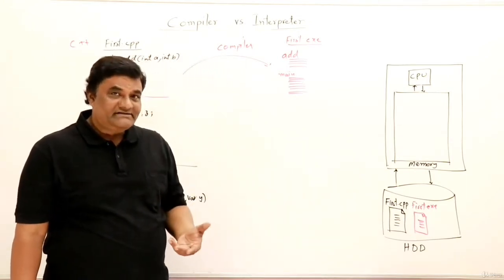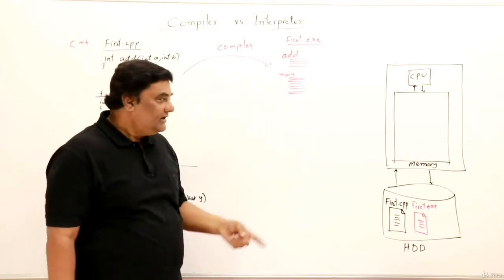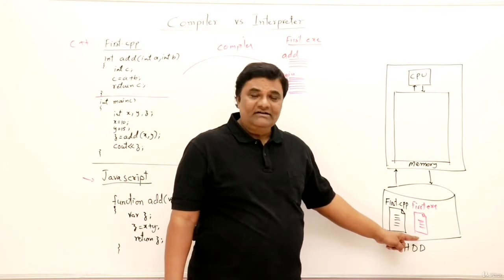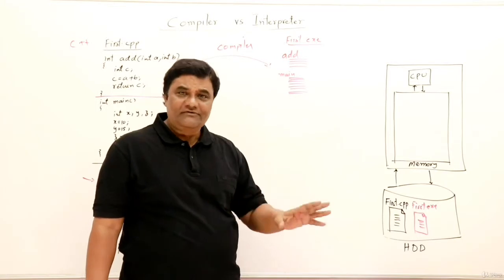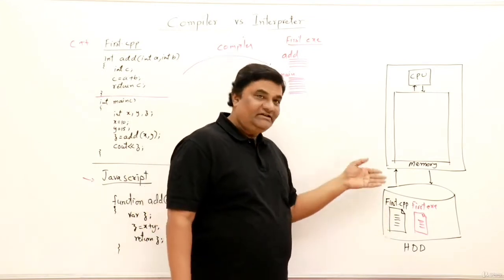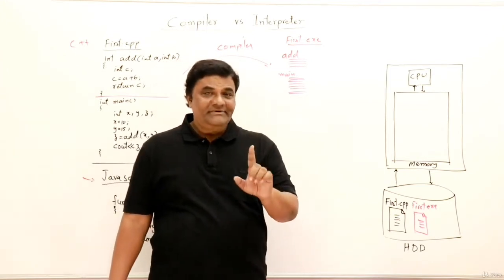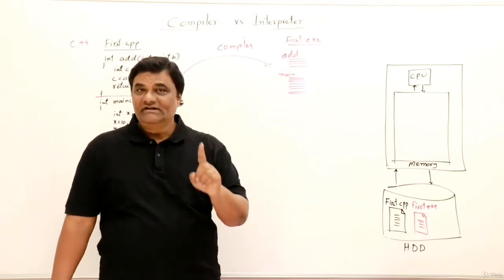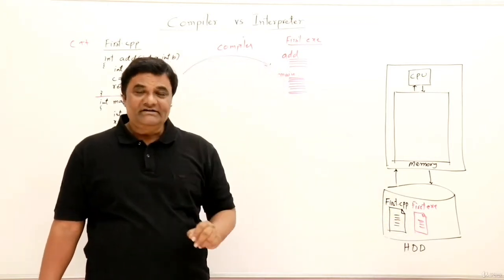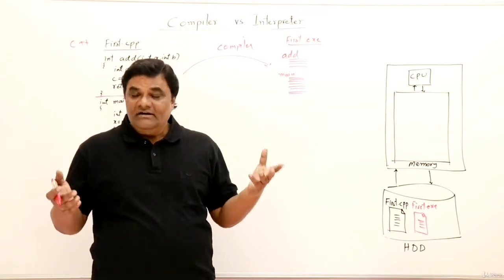If there are no errors, the compiler generates machine code — first.exe — and the job of the compiler is over. You can then run first.exe as many times as you want without needing the compiler again. Translation is done only once. The compiler generates a separate executable file, and whenever you run the program you don't need the compiler.